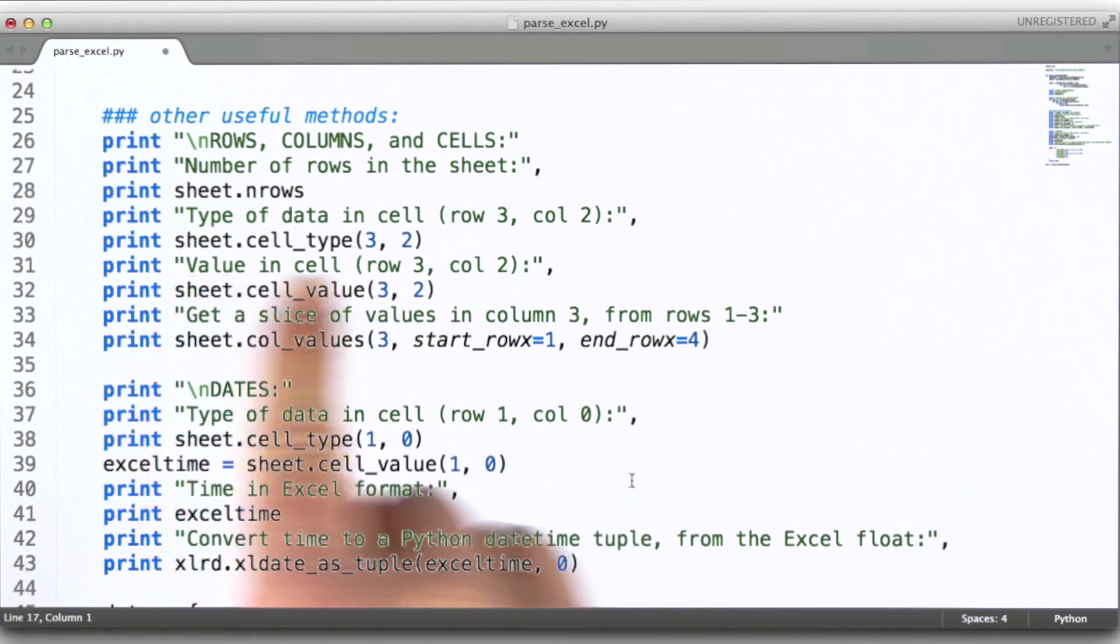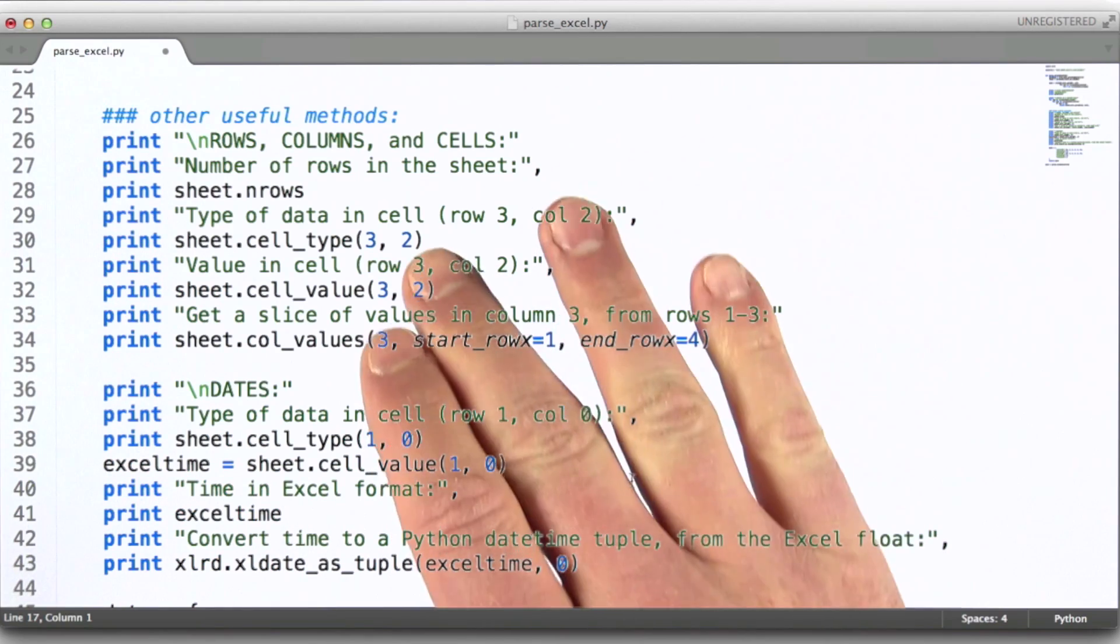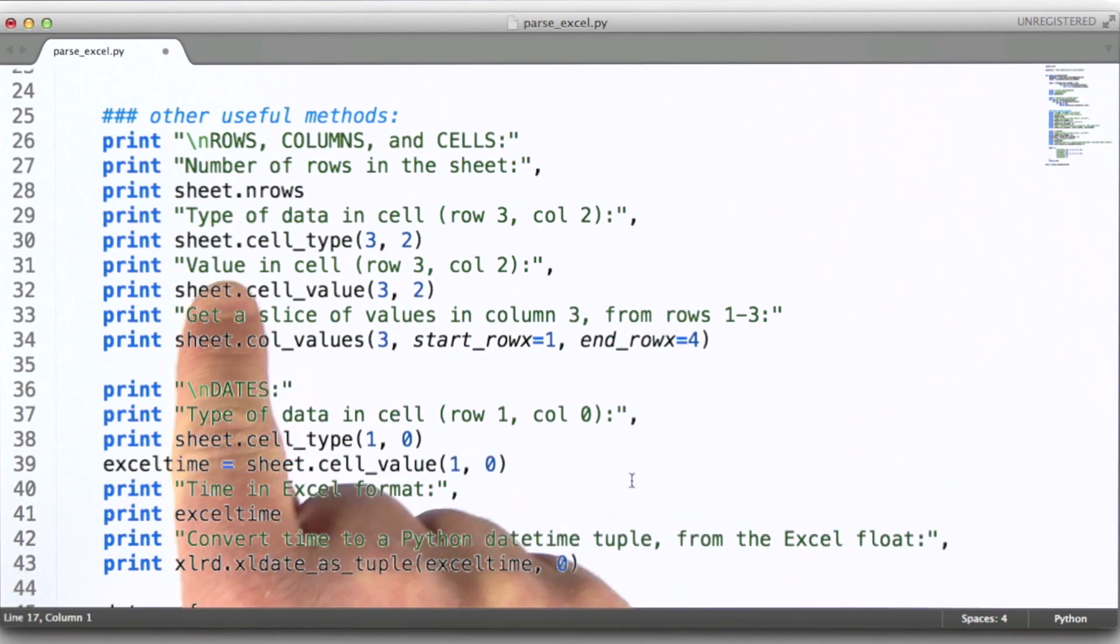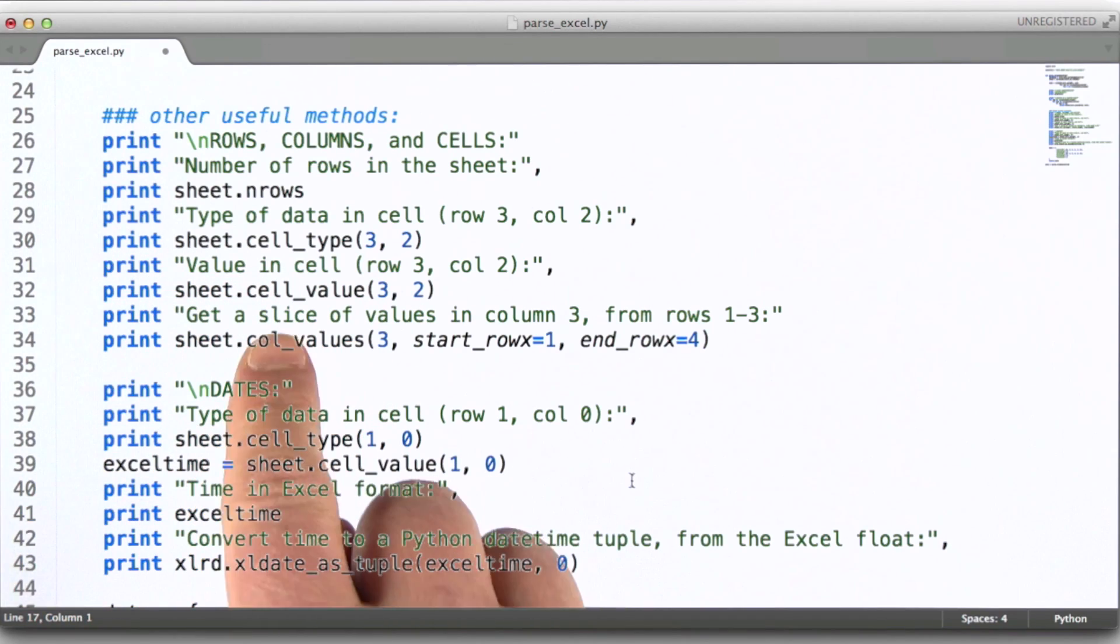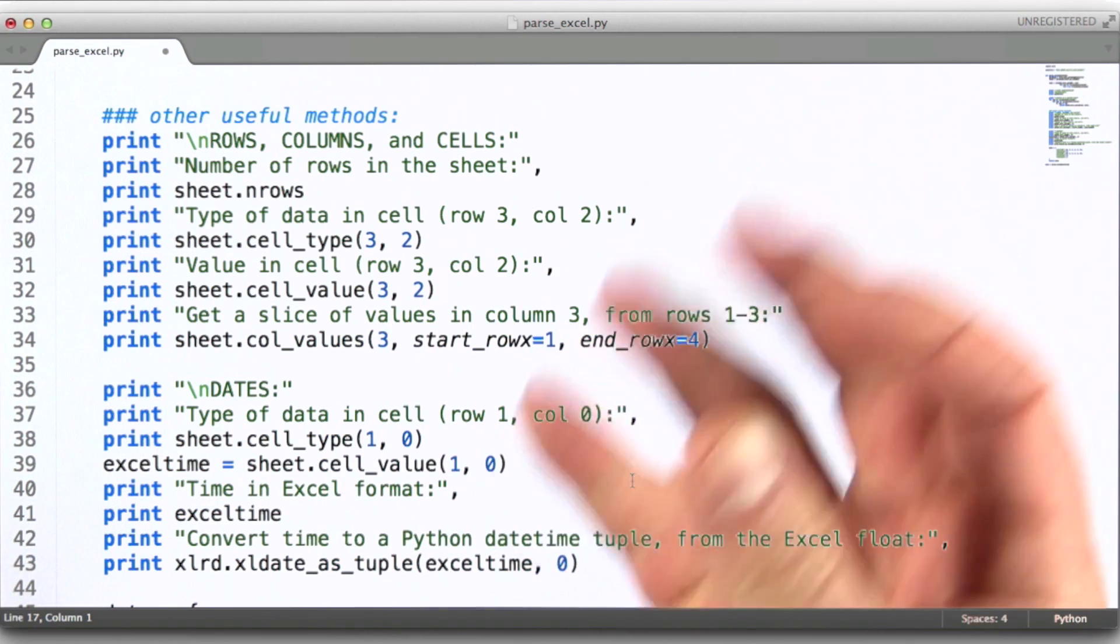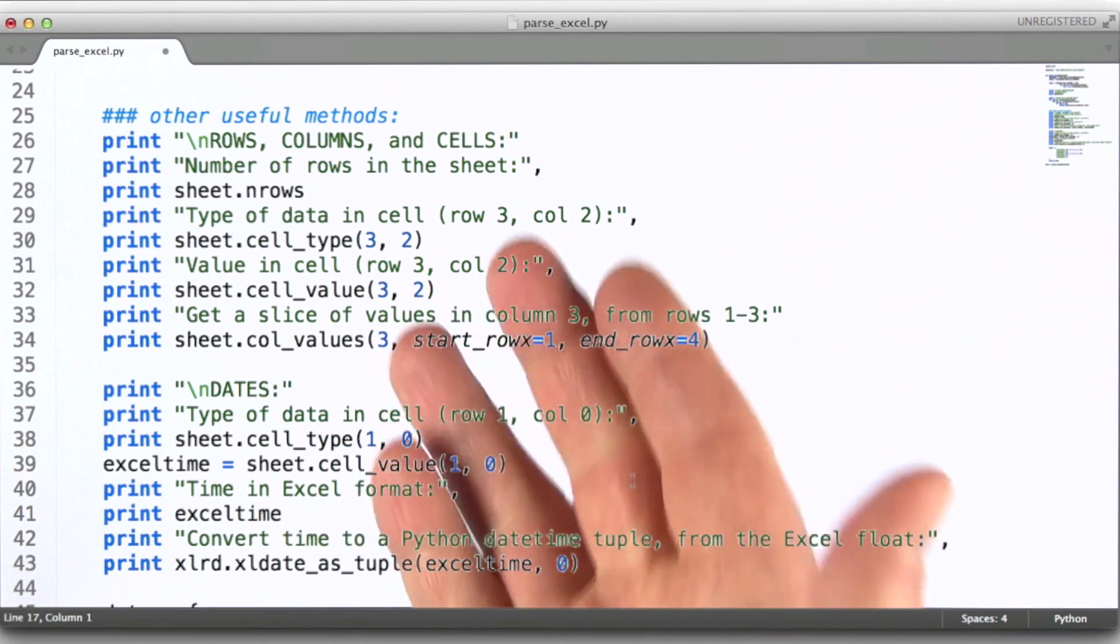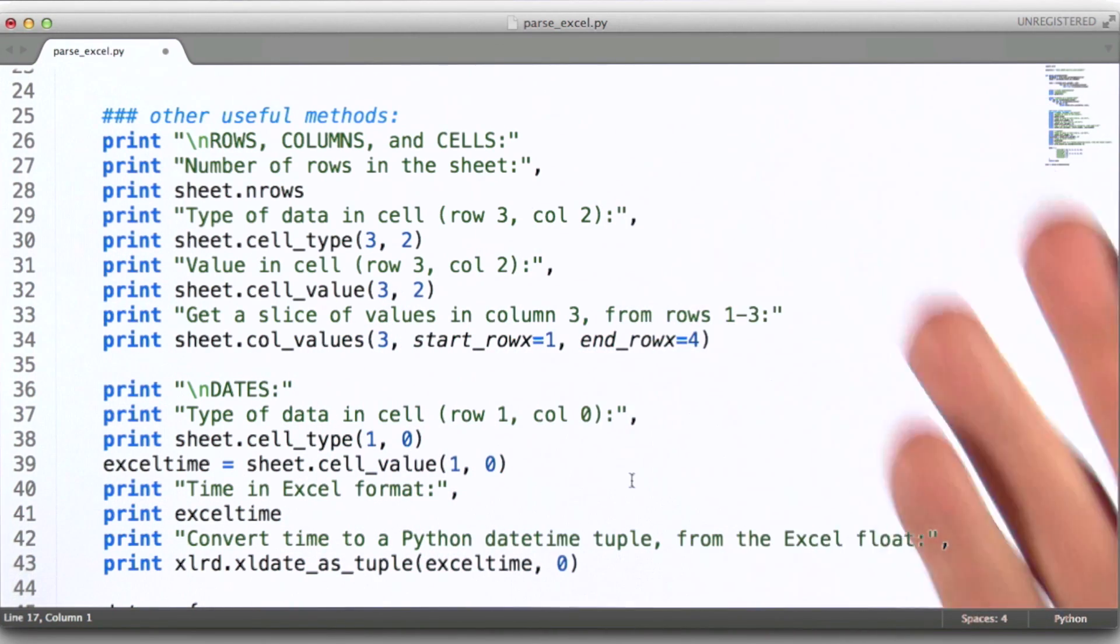This is an illustration of how to check the data type or the value type for a particular cell using the cell_type method for sheet, for objects of type sheet. And then cell_value, this actually gets the value that's stored in that cell as the appropriate Python value, whether it's a floating point value or something else.